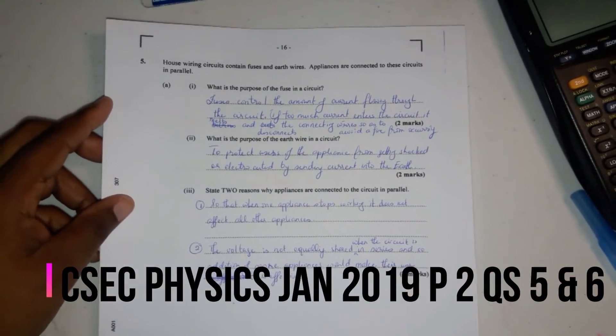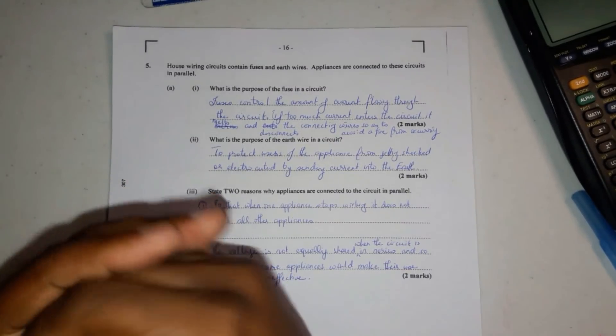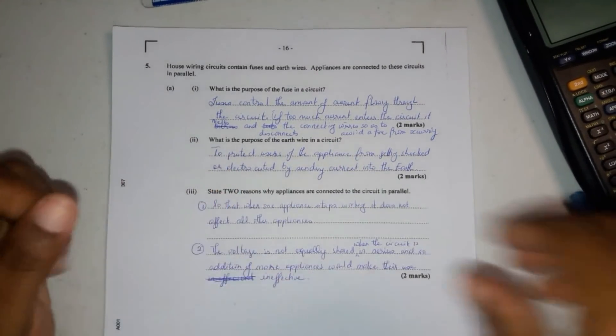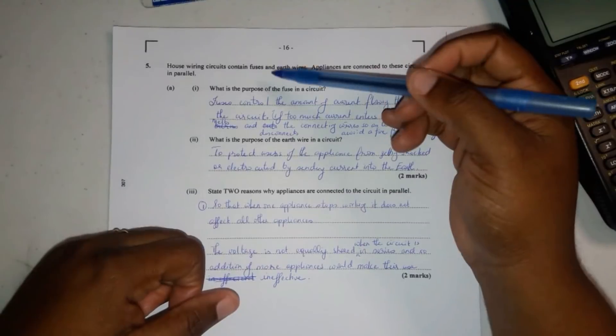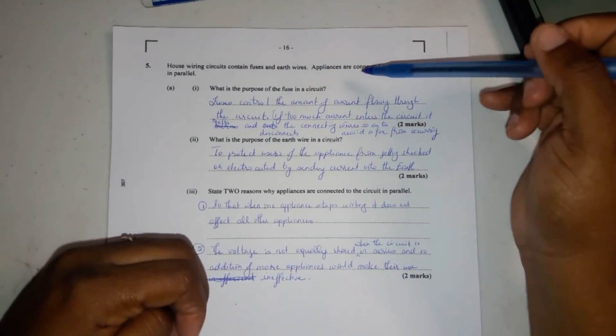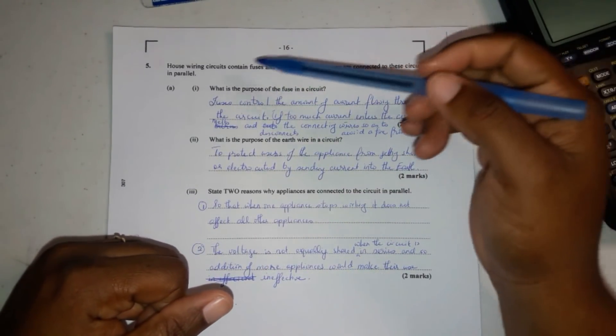Okay, so we are on question 5. I'm going to do 5 and 6 together because they're pretty short. So it says, house wiring circuits contain fuses and earth wires.